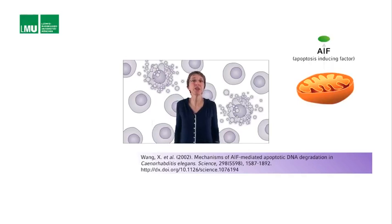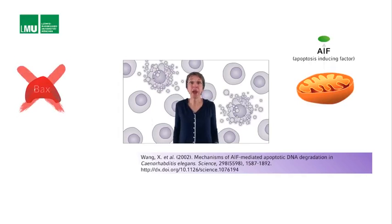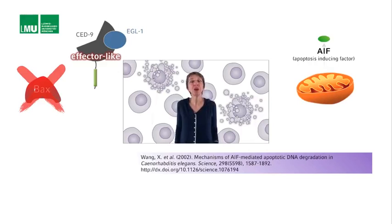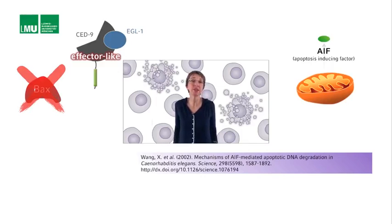Maybe not to release cytochrome C, but AIF and potentially other factors. If that was the case, who is responsible for this permeabilization - a factor such as BAX? Remember, there is no BAX in C. elegans. But in cells destined to die, CED-9 adopts a pro-apoptotic function, and I hypothesize that CED-9 bound to EGL-1 may have a function that is like that of activated BAX in mammals. Therefore, I speculate that if outer mitochondrial membrane permeabilization occurs in C. elegans, it might be dependent on EGL-1 and CED-9. And this is something we should really test.